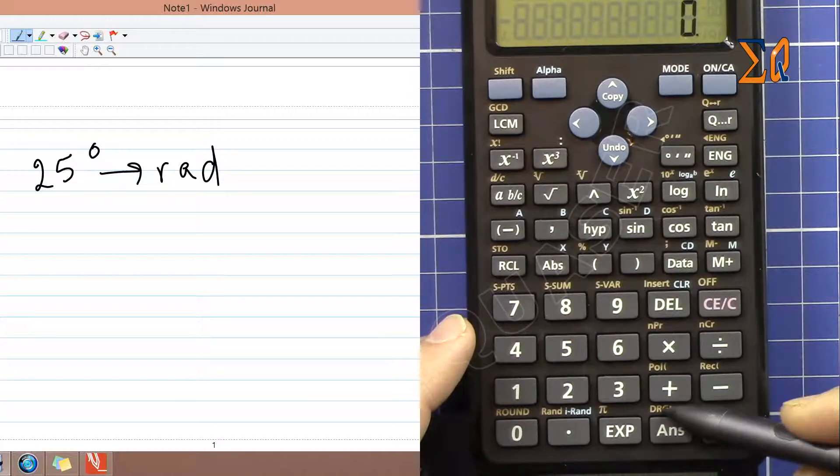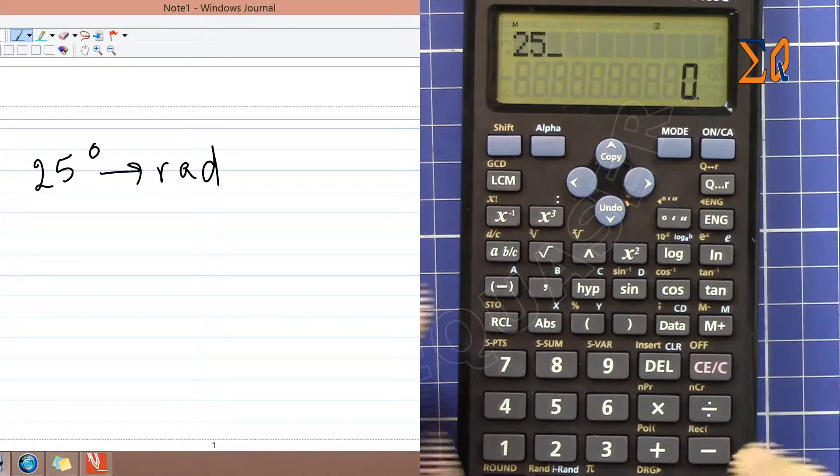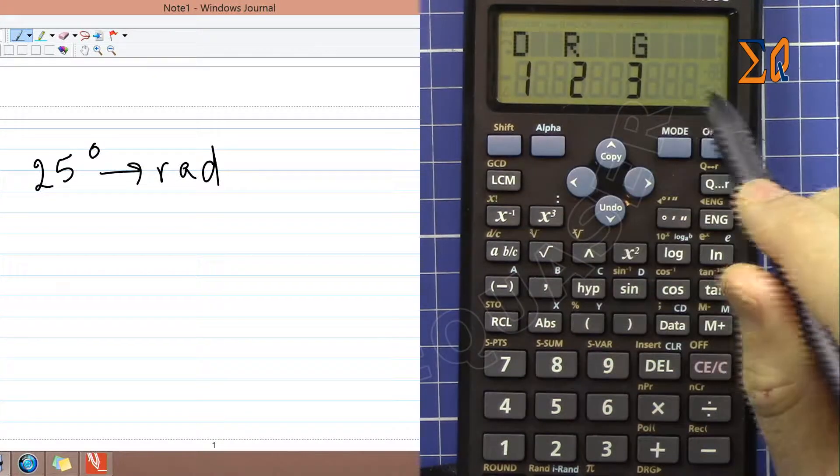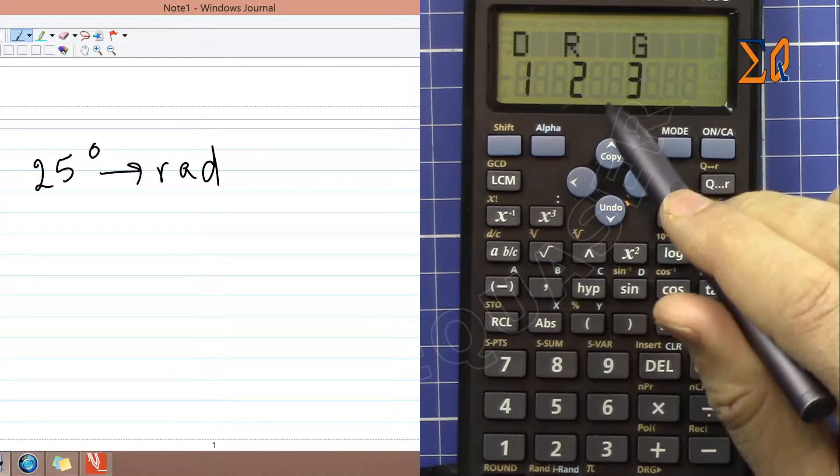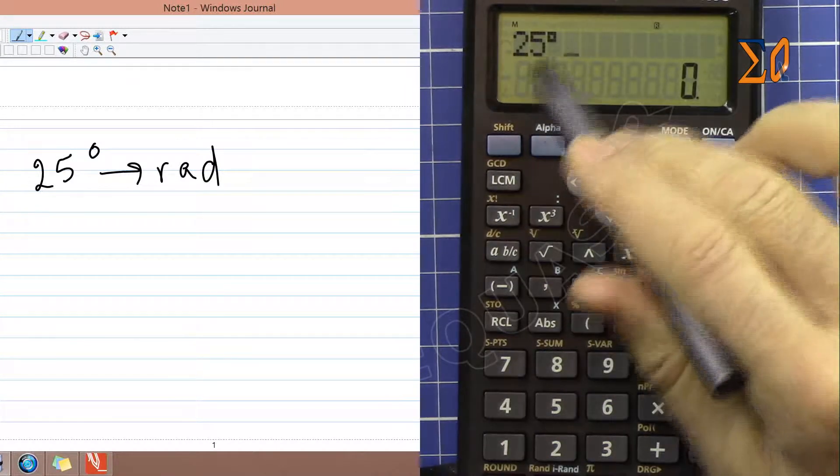This button - Answer or DRG with Shift - will work. Press Shift and this button, and it asks what is your current value. The 25 is in degrees, so press 1. Now the degree symbol appears. Since the calculator is in radian mode, press equals and you'll get the radian value.